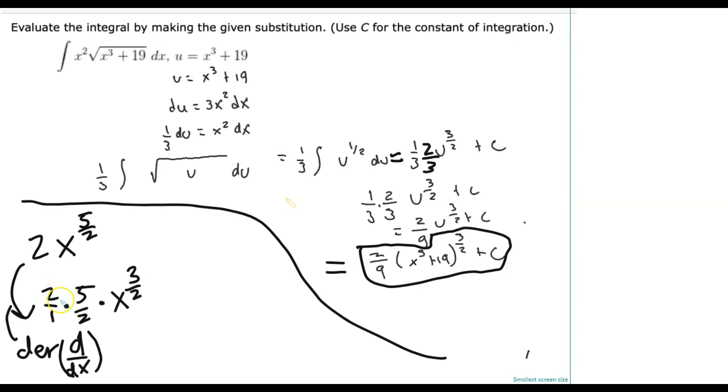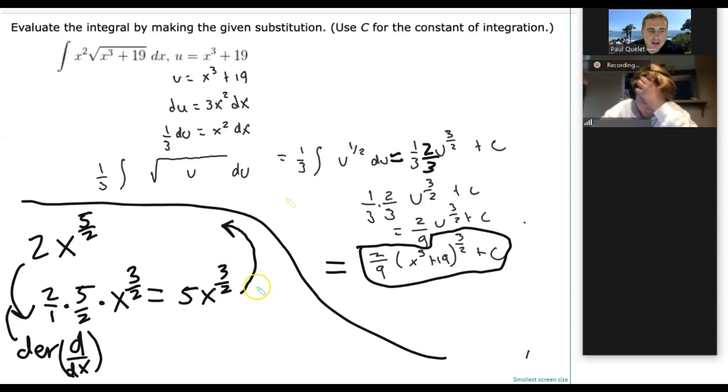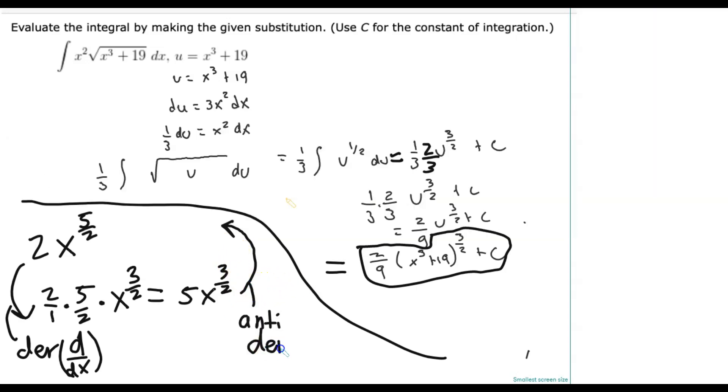So then that gives us 2 times 5/2 would be 5x^(3/2). Now here's the question: What step brings us back up the ladder? Not derivative, but the anti-derivative. Does that make sense? Anti-derivative means go back up the ladder—it's inverse, basically. Go back to where you started.